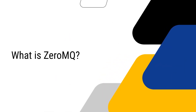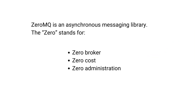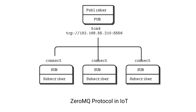Let us move on to ZeroMQ. What is it and how does it work? ZeroMQ is an asynchronous messaging library. The zero stands for zero broker, zero cost, and zero administration. It is used in distributed and concurrent applications that can run without a dedicated message broker, and defines a wire protocol, an application layer protocol. However, it requires an API to be used. Here is an example of a small-scale pubsub network from the ZeroMQ guide.